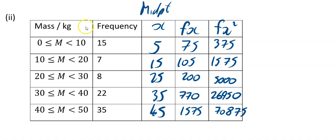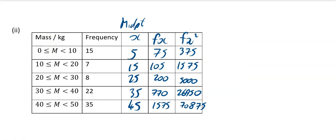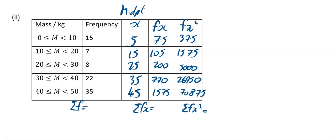That is the hard bit done. I've just added in summations at the bottom: sum of the f column, sum of the fx column, and sum of the fx squared column. Adding up your f column, you're going to get 87. Add up your fx column, you're going to get 2725. Add up your fx squared column, you're going to get 104775.